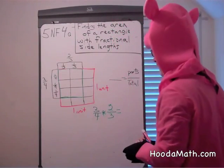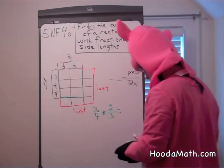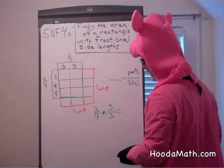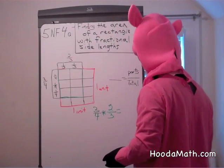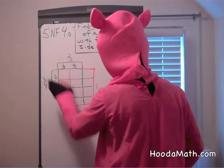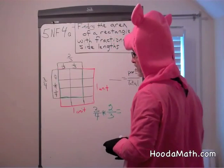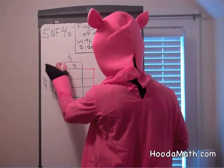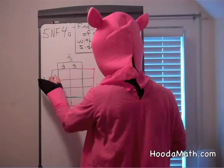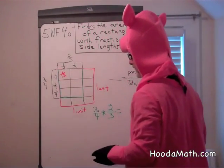And we want to know what the area of this green rectangle is. So what we do is we do each part and multiply. So one-third times one-fourth, we multiply the numerators and we get one-twelfth.